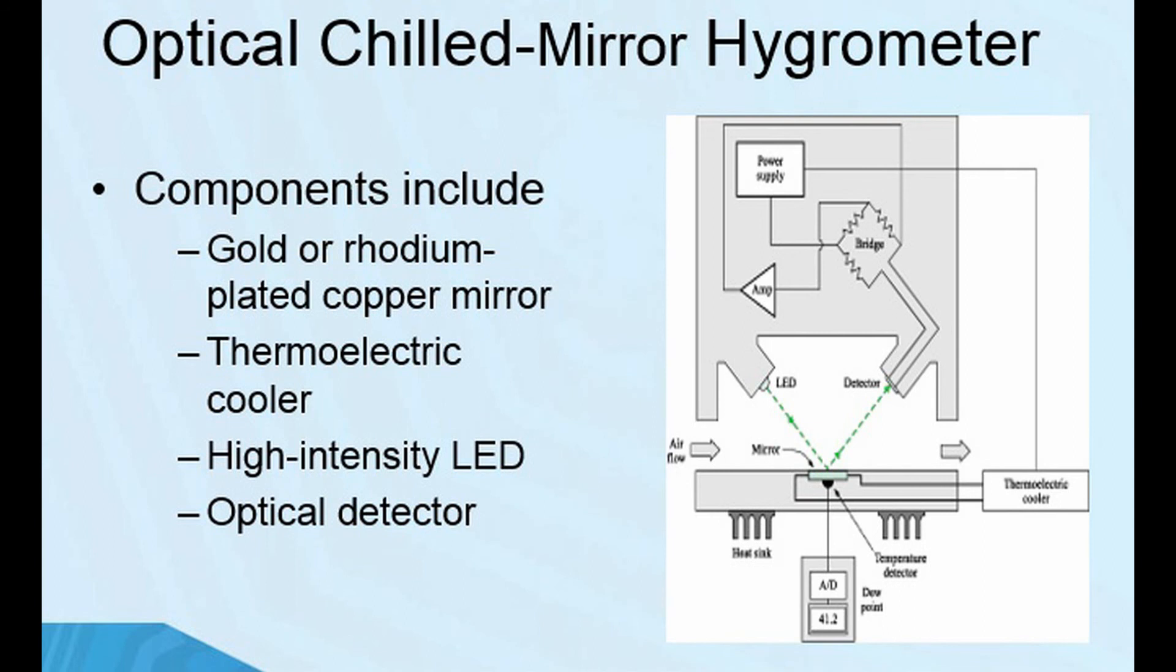Here's one final device for measuring humidity. And notice the complexity. Once again, you have a reference, but then you also have a Wheatstone bridge. That means you're going to be changing resistance. Once again, it just shows the complexity of measuring humidity.